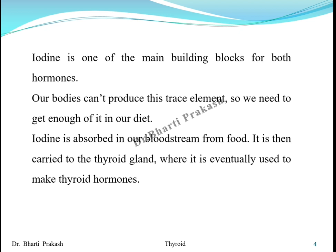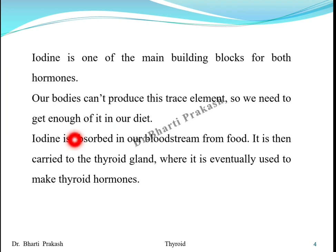Iodine is one of the main building blocks for both hormones T3 and T4. Our bodies cannot produce this trace element, therefore we need to get enough of it in our diet. Iodine is absorbed into the bloodstream from the food that we eat, and is then carried to the thyroid gland where it is eventually used to make thyroid hormones.